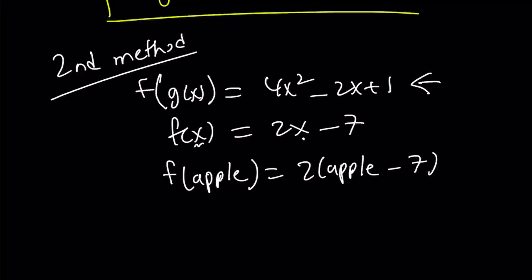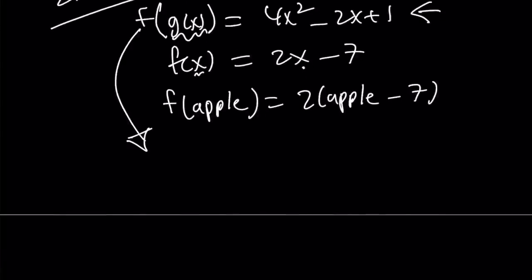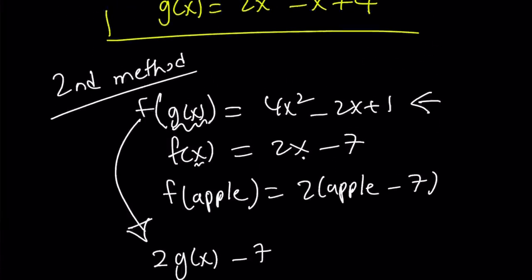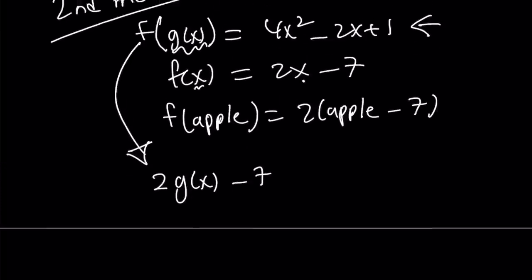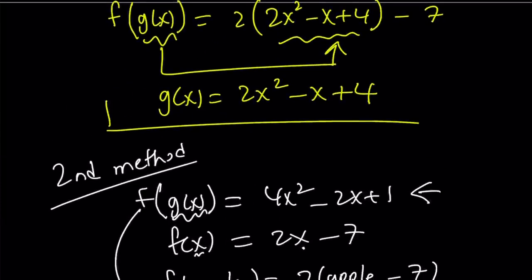Now what do we have instead of apple? We have g(x). So f(g(x)) by definition is going to be 2 times g(x) minus 7. So this is what I meant with the first method. I'm trying to get my expression to look like 2 times something minus 7; that something was g(x). Remember that? That's how we got g(x). Great.